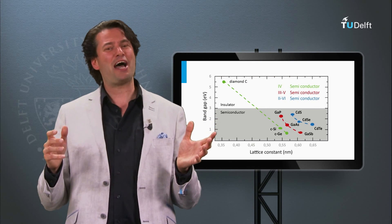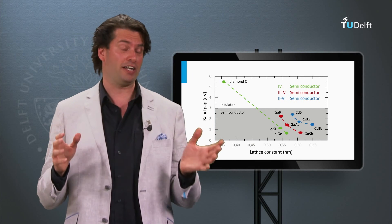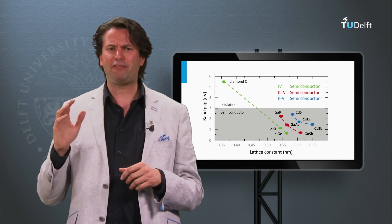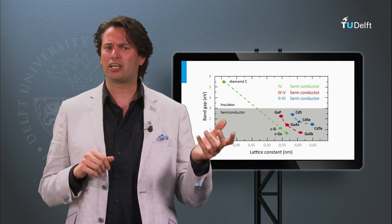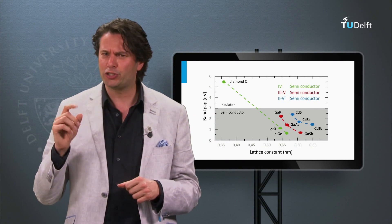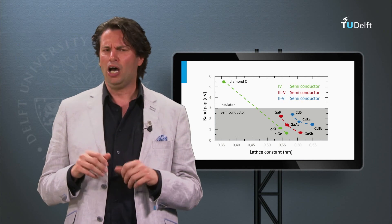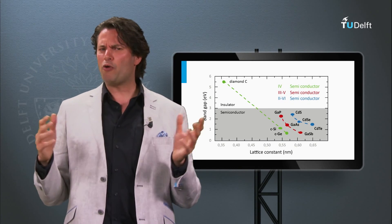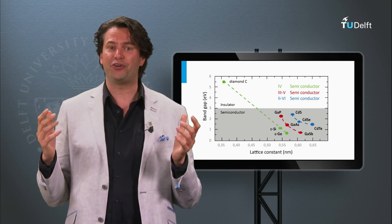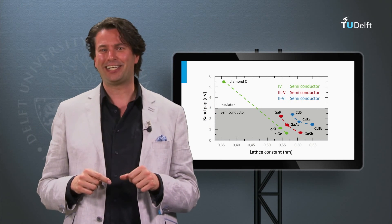I hope you have become familiar with the important properties of semiconductors, like the valence band, the conduction band and the band gap. I have shown that there are different semiconductor materials like silicon, germanium, gallium arsenide and cadmium telluride. Important to remember is that all these semiconductors have different band gaps. So, how can we make semiconductor materials conductive? Or in other words, how can we fill the conduction band with free electrons? It is my pleasure to show that in the next video.